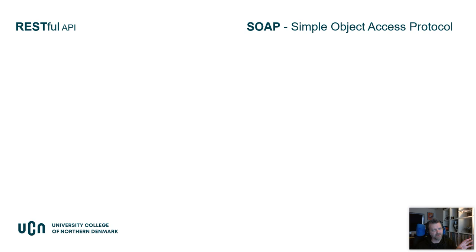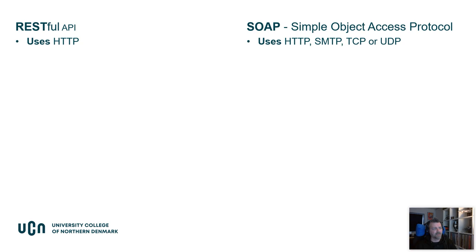We have two examples: RESTful API and SOAP. SOAP is a Simple Object Access Protocol. A RESTful API uses HTTP, whereas SOAP can use HTTP, SMTP, or UDP — all protocols. You need to know that there can be different protocols in use for SOAP.